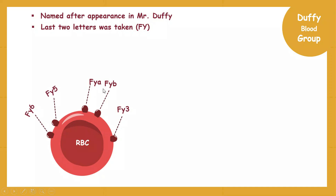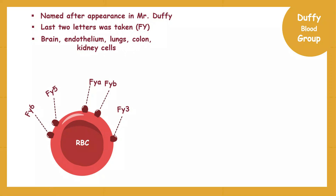Remember that Duffy blood group system antigens are also expressed on other body cells, such as brain, endothelium, lungs, colon, and kidney cells. However, these antigens are not expressed on white blood cells and platelets.